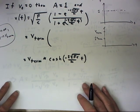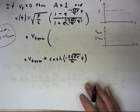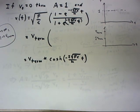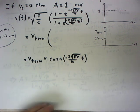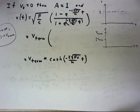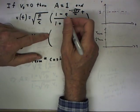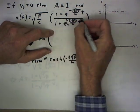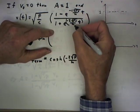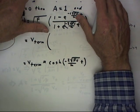The same idea of terminal velocity applies to drag forces that are proportional to the square of the velocity, just as it does for linear drag forces. Now I want to look at this expression in a couple of ways.